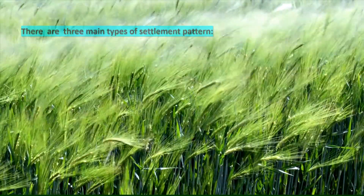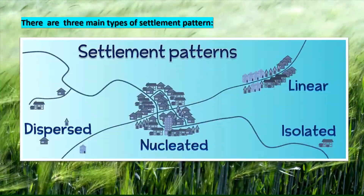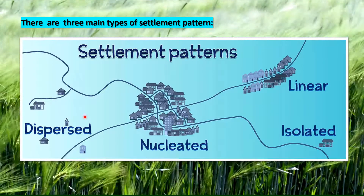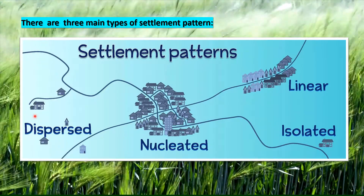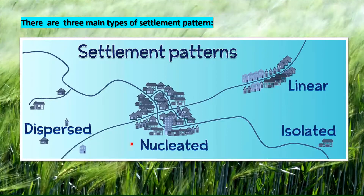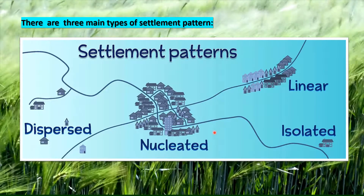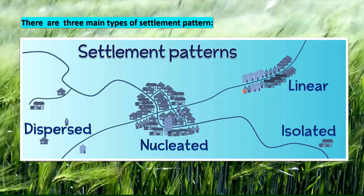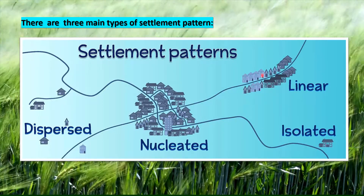There are three main types of settlements: the dispersed settlement, also known as scattered settlement; the nucleated settlement, also known as clustered settlement; and linear settlements.